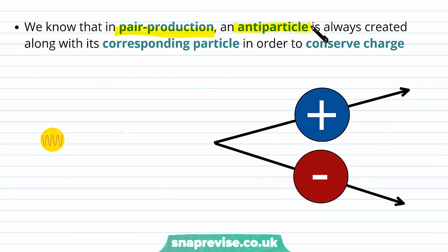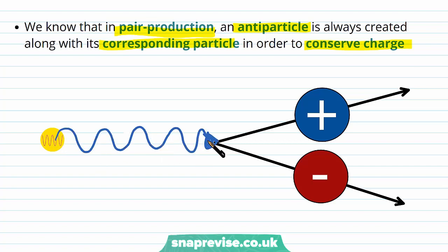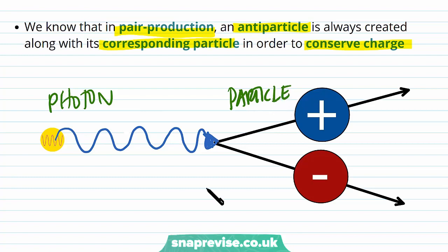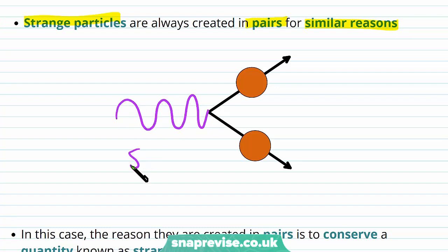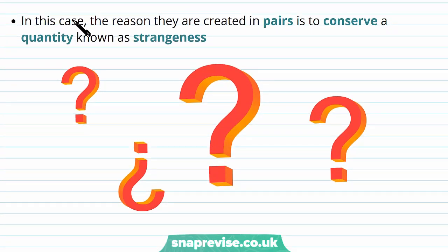In pair production, an antiparticle is always created along with its corresponding particle in order to conserve charge — a photon can create a particle–antiparticle pair. Strange particles are always created in pairs for similar reasons, but they are created via the strong force. The reason they are created in pairs is to conserve a quantity known as strangeness.